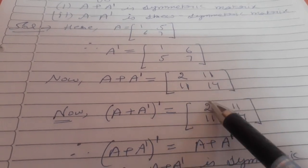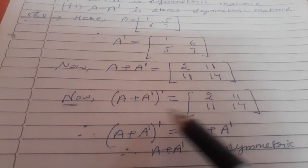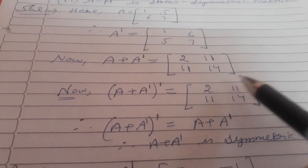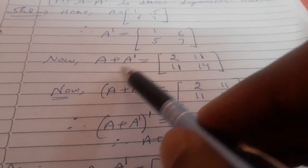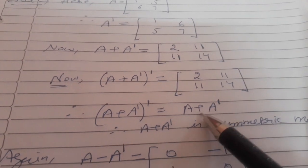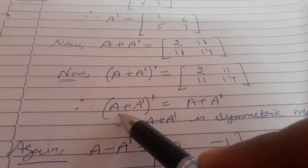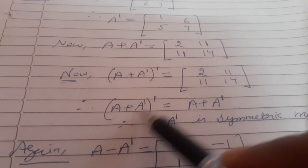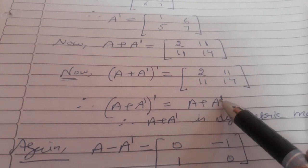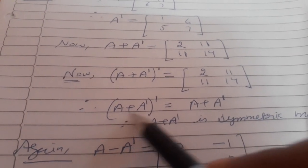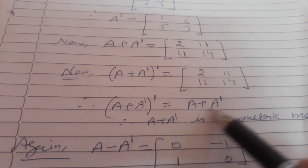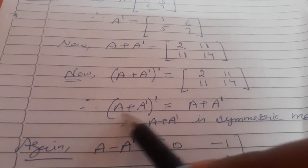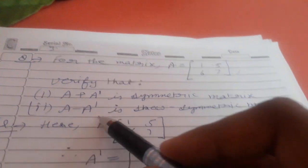After computing A plus A transpose, to prove this resulting matrix is symmetric, we take its transpose by interchanging rows and columns. The two matrices turn out to be the same, so we can write: the transpose of (A plus A dash) equals A plus A dash, which means A plus A dash is a symmetric matrix.